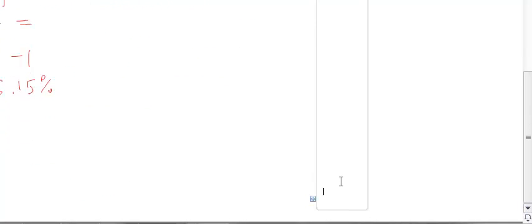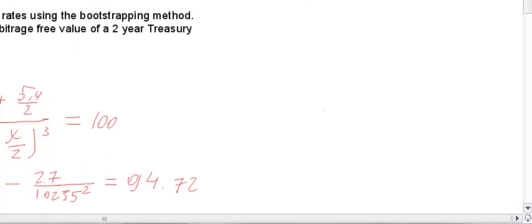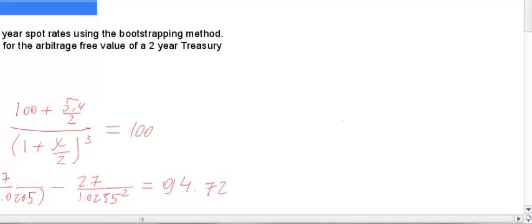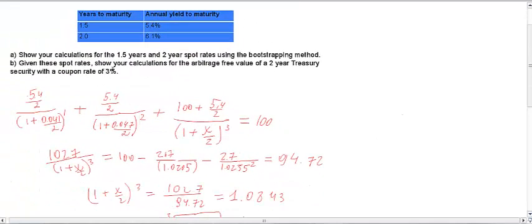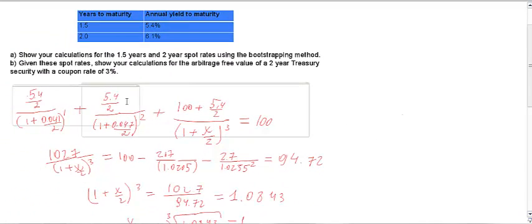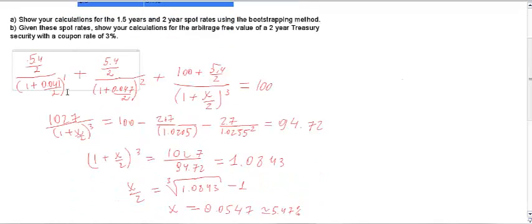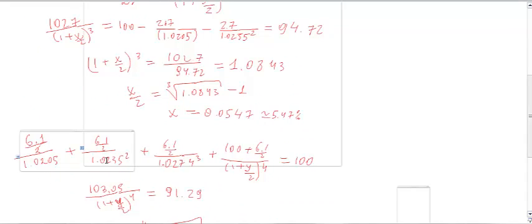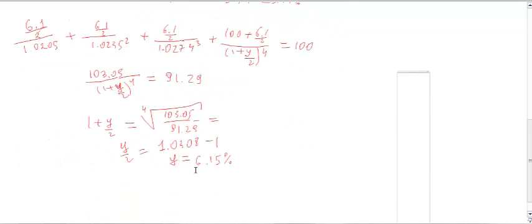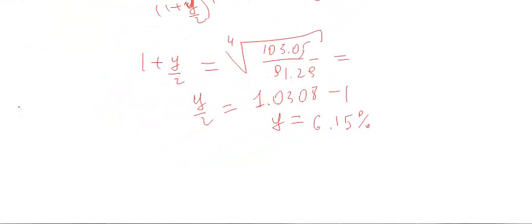The final task is to calculate the arbitrage-free value of a 2-year Treasury security with a coupon rate of 3%. We discount each cash flow using the spot rates we derived: the 6-month rate of 4.1%, the 12-month rate of 4.7%, the 1.5-year rate of 5.47%, and the 2-year rate of 6.15%.